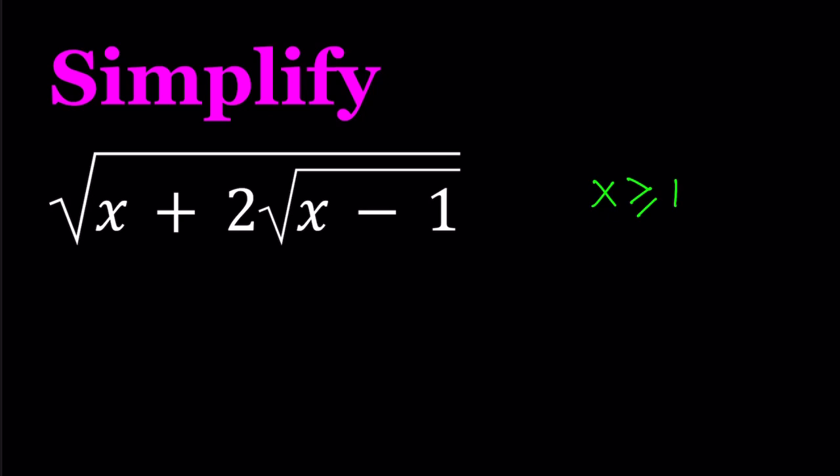So under those conditions, we're going to simplify this radical. And then we're going to find the value, which is true for certain values of x. And then, at the end, I'm going to show you a graph that verifies this finding. Okay, let's go ahead and get started.